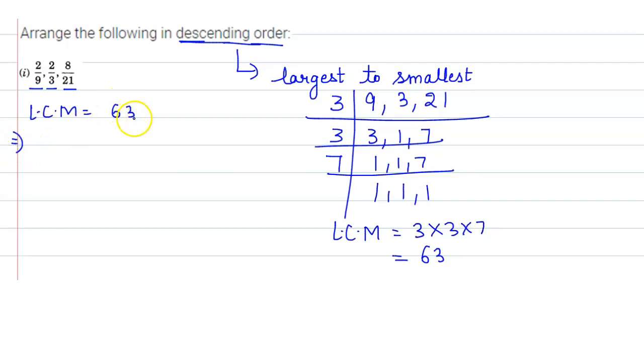Now divide this LCM by denominator, and the answer obtained will be multiplied by numerator and denominator both. 63 divided by 9 gives 7, so 2 by 9 into 7 upon 7. So here we get 14 upon 63.